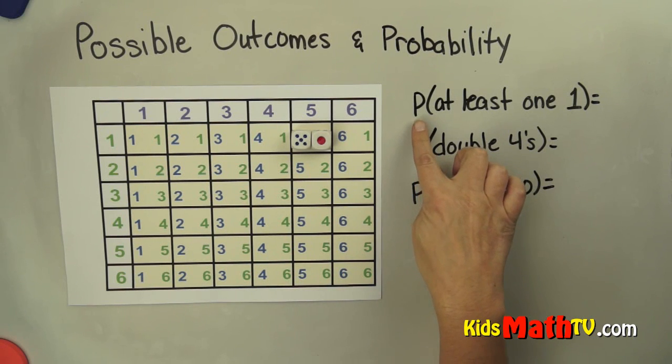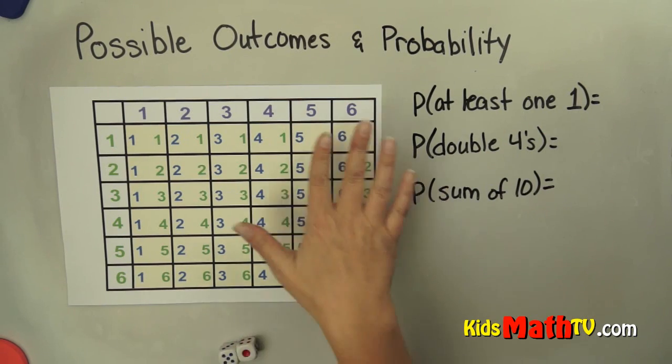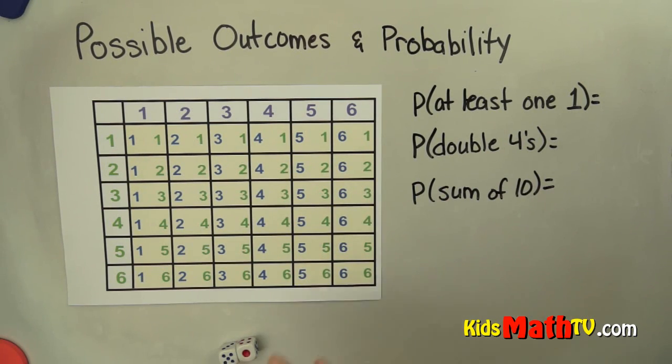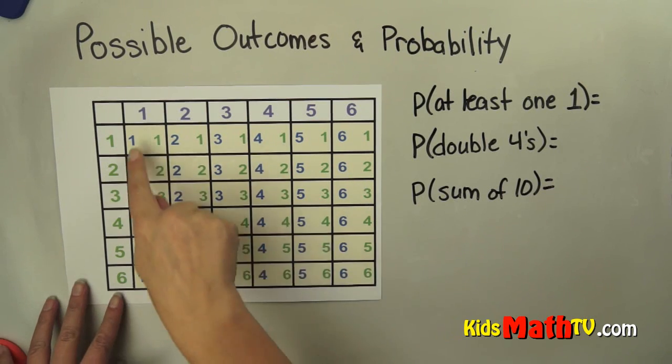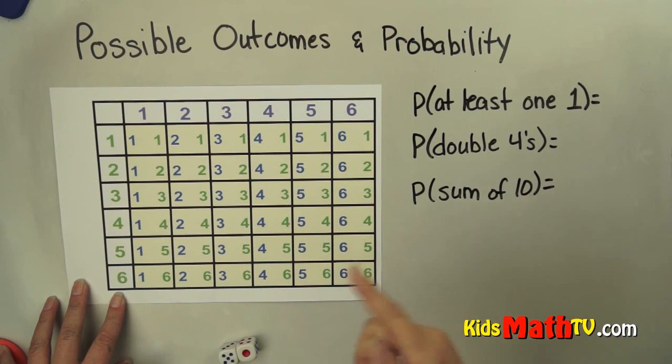What is the probability of rolling at least one 1? Well, I look at all my possible outcomes and I find all of the outcomes that have at least one 1. And I see they're all in these two columns. So I'm simply going to count all of these possibilities.